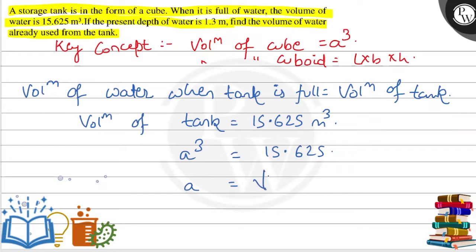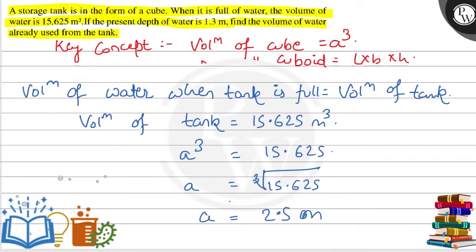So A is equal to 15.625, meaning the side of the tank A is equal to 2.5 meter.